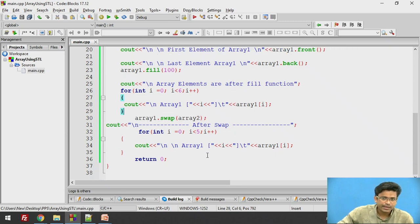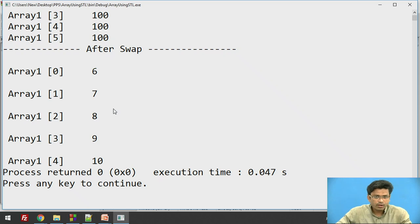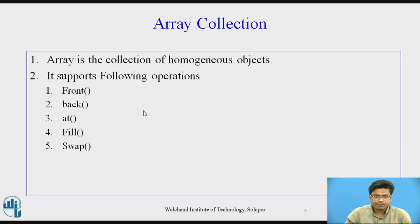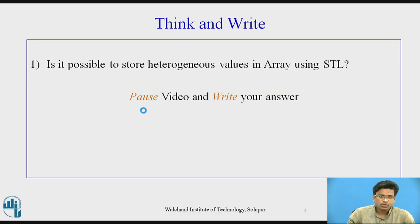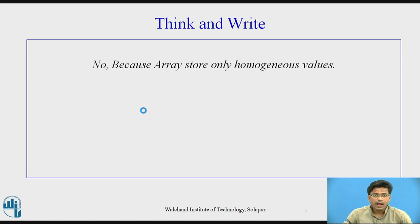After the swap operation we are getting these values. So we have seen all these functions. Think and write: Is it possible to store heterogeneous values in the array by using STL? No — because an array stores only homogeneous values; it is not allowed to store heterogeneous values.